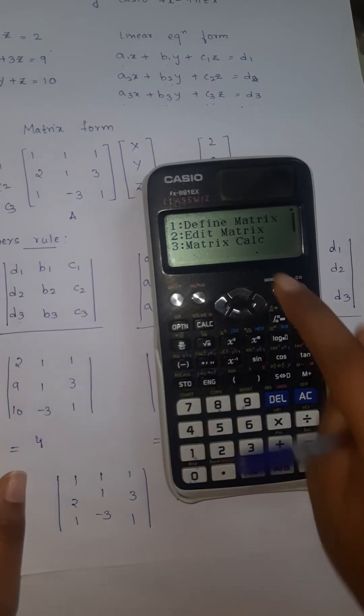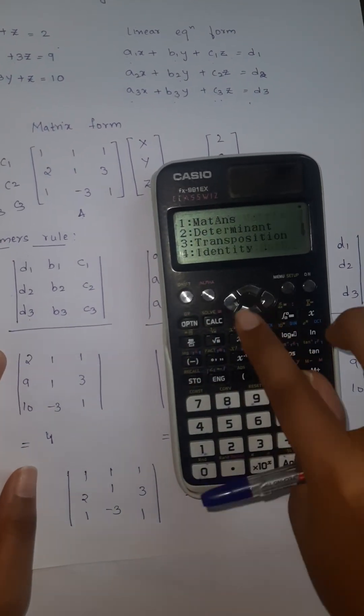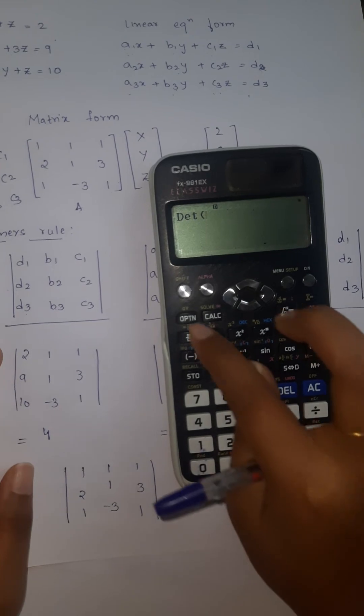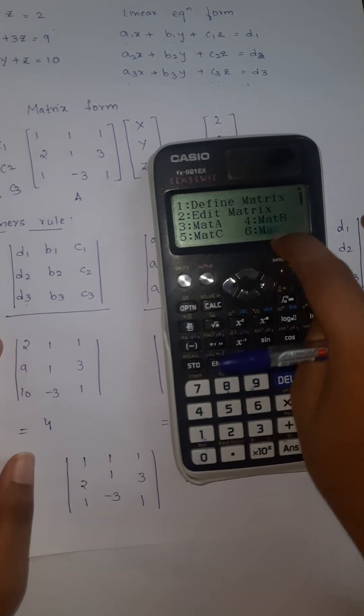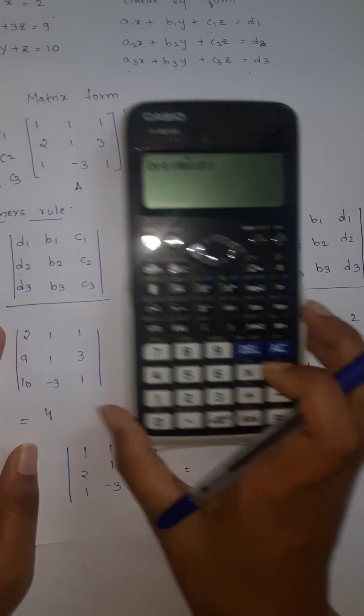Go to option, we need matrix calculation. Click on 3. Go to option, what do we want? Determinant. That is 2. Go to option, what do we want? Matrix D. That is 6. We got 4.